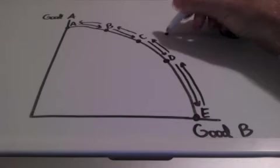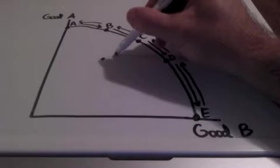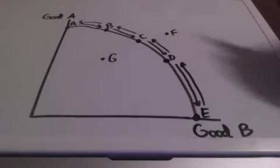But you may see points like this, a point F, or even like a point G over here. Let's talk about what these mean.